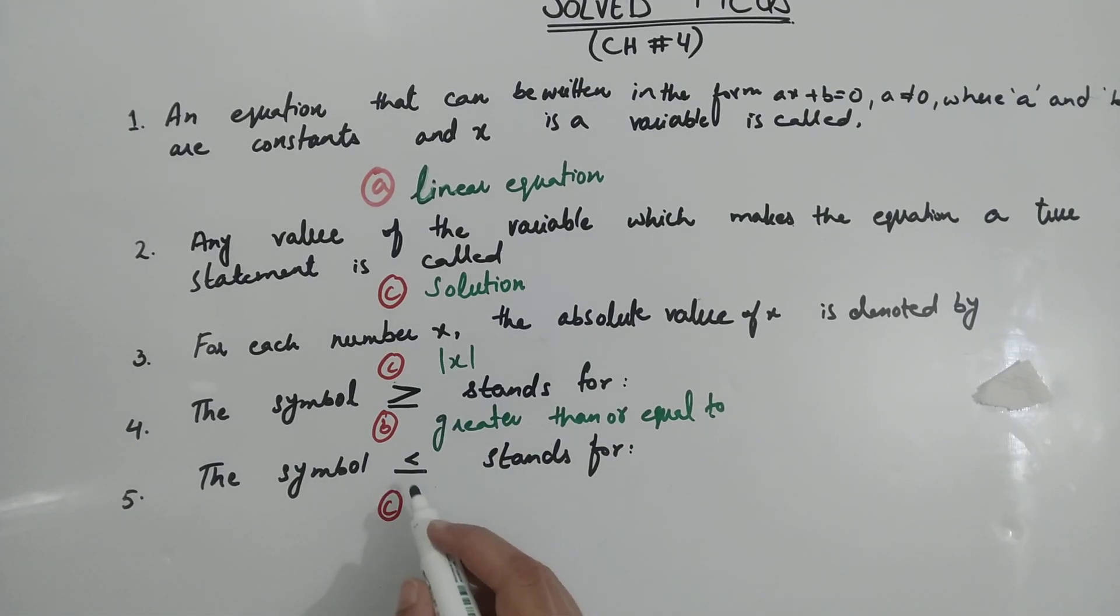Part number 5: That symbol stands for less than or equal to. Because here you can see that if you read the symbol, then it will be closed, then it will be less than or equal to.